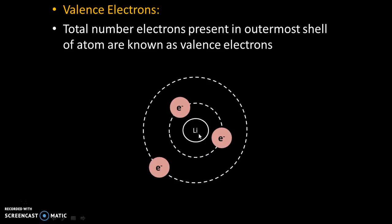Let's take the example of lithium atom. In lithium, there are overall three electrons. But in the outermost shell, there is only one electron. That's why lithium has one valence electron. Thank you.